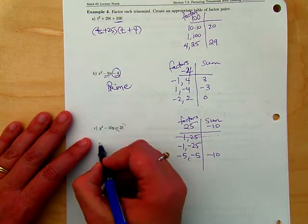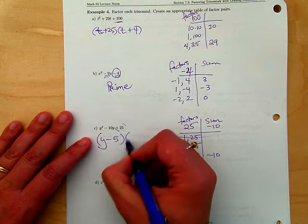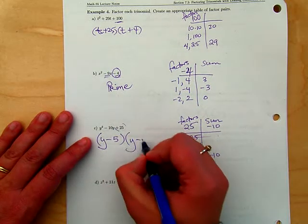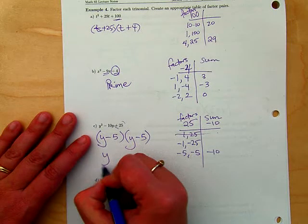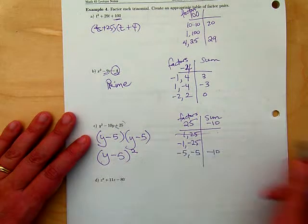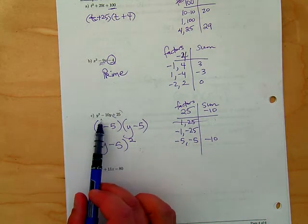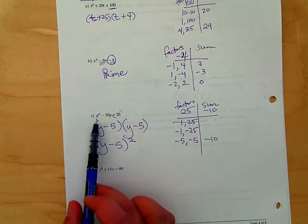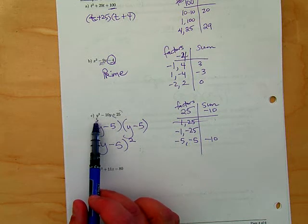This looks like y minus 5 times, it's the same thing as y minus 5 squared. Anything times itself is squared. By the way, we're going to talk about special cases in section 7.5.